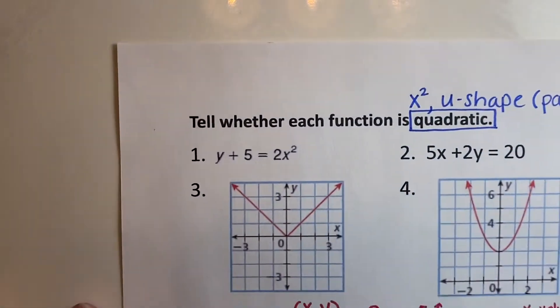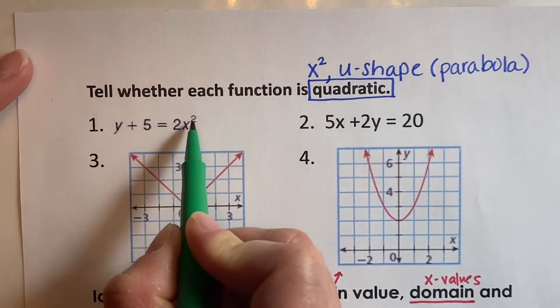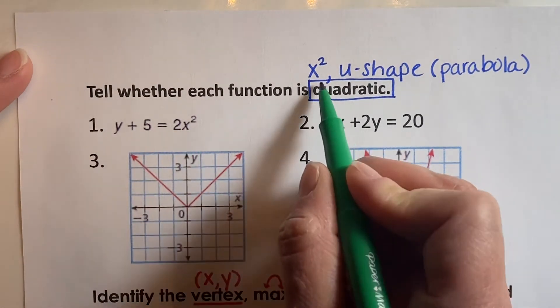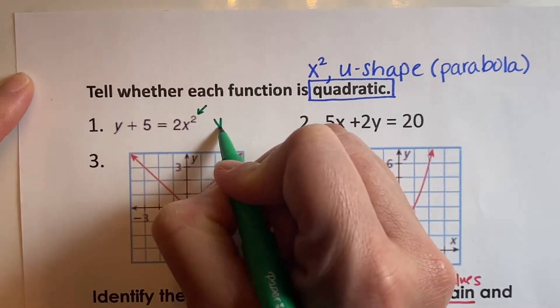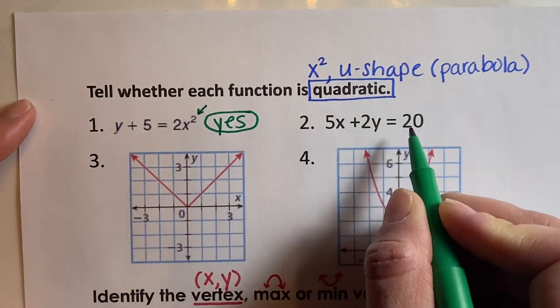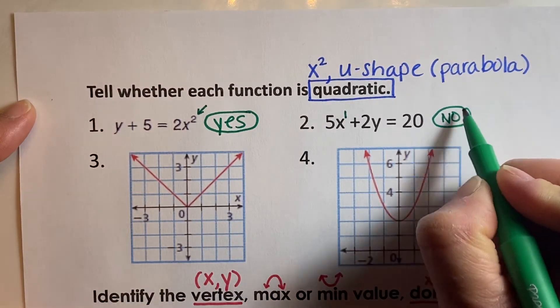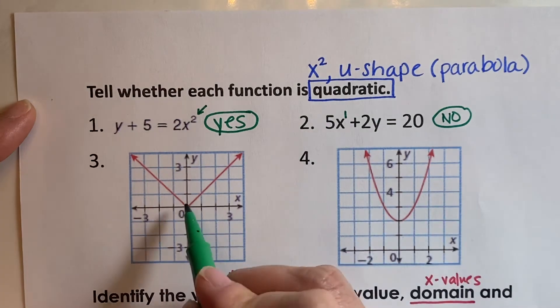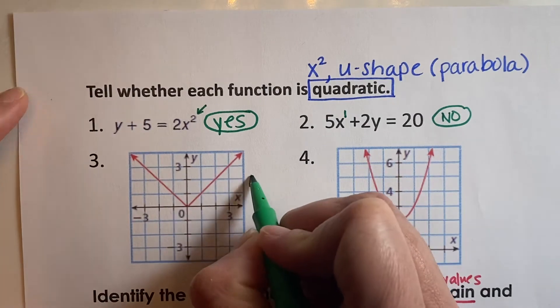Let's look at some examples of quadratic functions and identify whether they are quadratic or not. For the equation y plus 5 equals 2x squared, you're looking for x to be squared and a u-shaped graph, a parabola. x is squared here, so yes, this is quadratic. For 5x plus 2y equals 20, x has a power of 1, so no, this is not quadratic — this is linear, standard form for linear. A v-shaped graph is not a smooth u, so no, that is not quadratic.